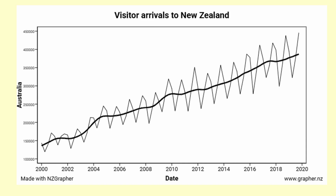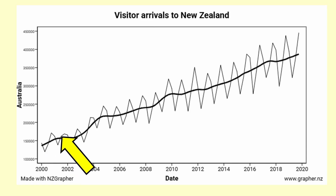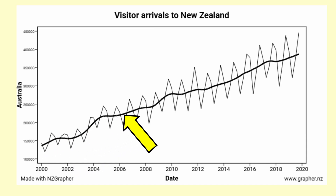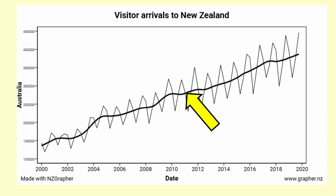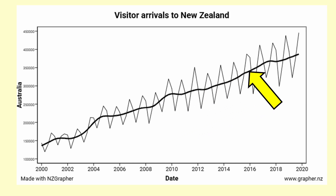The data is quarterly so that you can see there is a seasonal pattern. A quarter is three months or one quarter of a year. The fitted line shows the trend after the seasonality and variation have been accounted for, and that is what we are interested in for this video.